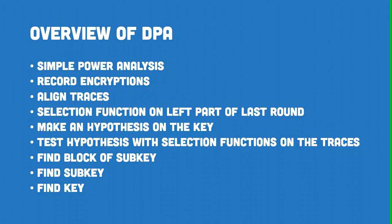I will take you through the steps of a DPA attack at a higher level so you don't get lost in the details when we dig deeper. The first thing we do is an SPA — Simple Power Analysis — where we try to guess what cipher is being used during the encryption. This is very important because if we don't know what cipher is being used, we cannot perform the attack. In the paper, we will focus on DES. Once we know what cipher is being used, we record a bunch of encryptions with the card — we record the traces and the ciphertexts. The traces are basically graphs of the power consumption over time. We then want to align them so we can do computations on them.